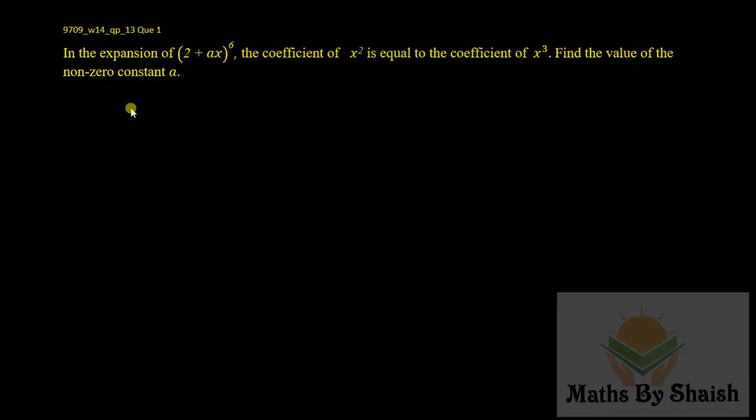Hello everyone. In this video we are going to discuss a question from binomial expansions from 9709 2014 paper 1. The question is: in the expansion of (2 + ax)^6, the coefficient of x² is equal to the coefficient of x³. Find the value of nonzero constant a.